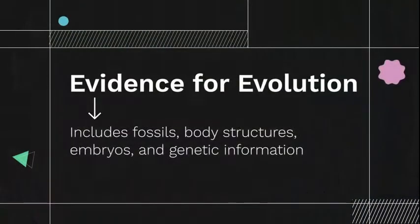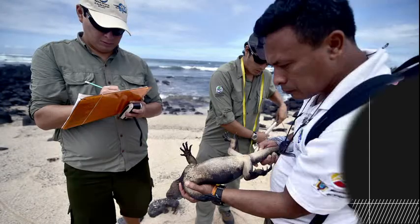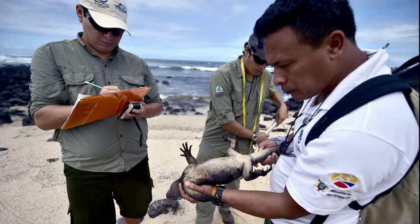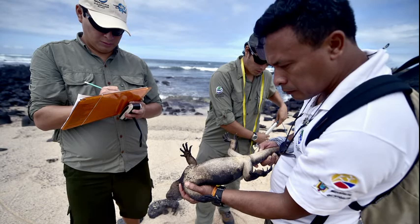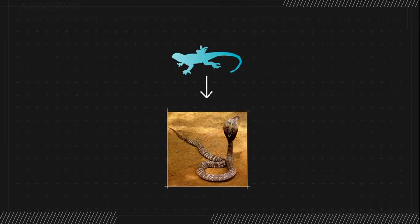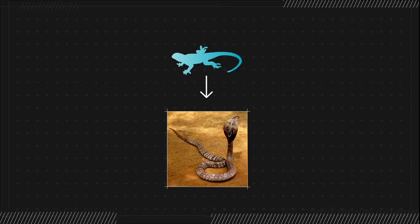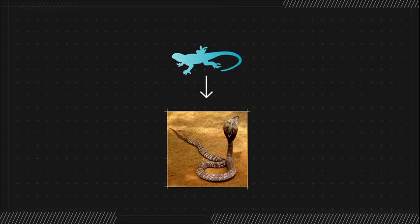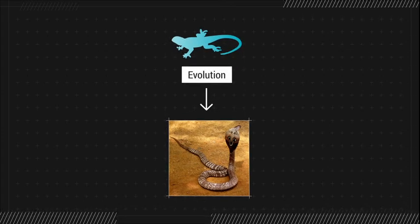Evidence for evolution includes fossils, body structures, embryos, and genetic information. Scientists are constantly collecting data about how modern life developed. When populations of living things, or organisms, change over many generations, it's called evolution.